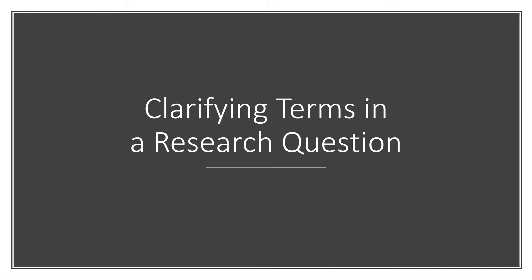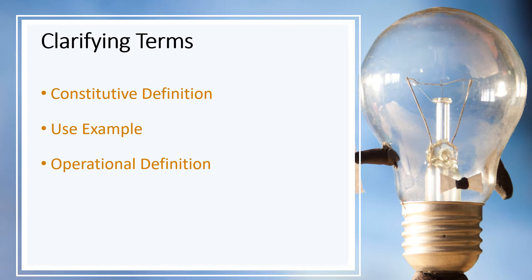When asking a research question, it is important that you clarify the terms in your research question. There are three ways to do this: first, by using a constitutive definition — that is, the dictionary definition; second, by using examples; and third, by using an operational definition.